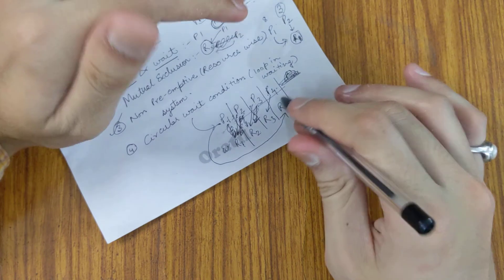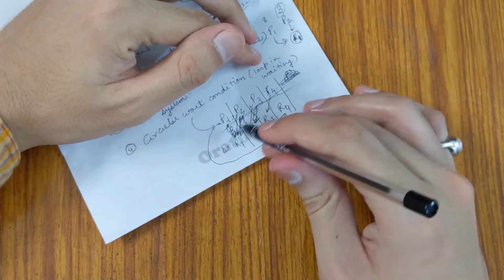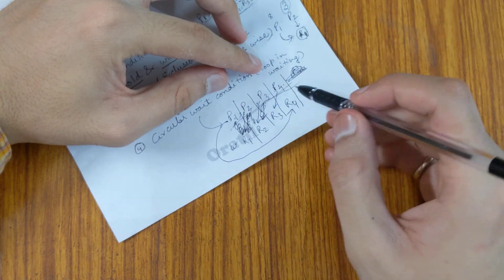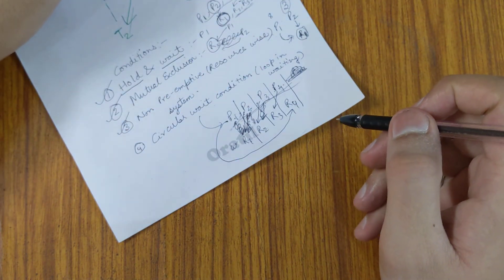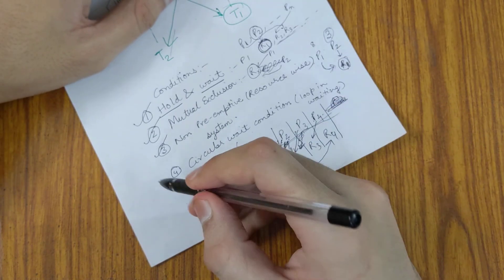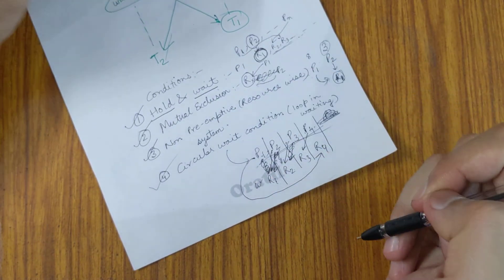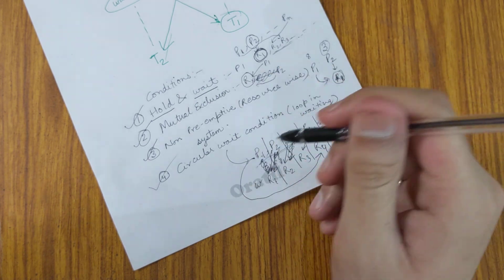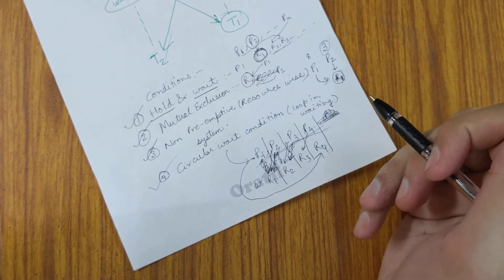They will be stuck waiting for resources which are held by each other. So this kind of resource loop is an example of circular wait. These are the four conditions which should hold for a deadlock to occur. I hope this is clear. If you have any doubts, please ask in the comments. Thank you, friends.